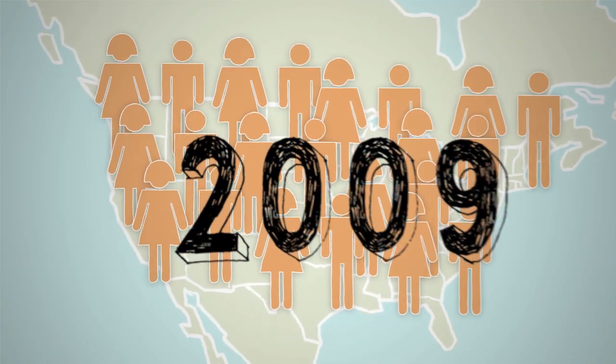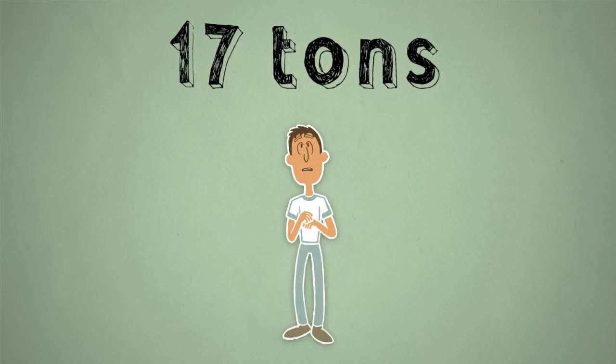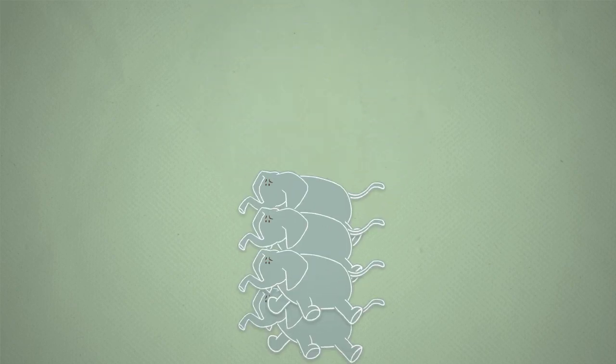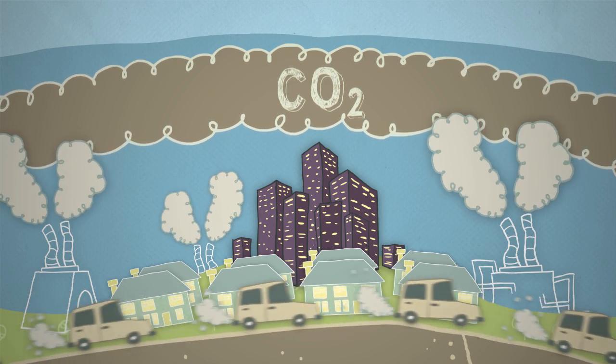In 2009, each person in the United States used enough fossil fuel energy to release an average of 17 tons of carbon dioxide. That's about the equivalent of four African elephants. Over time, all of that carbon dioxide really starts to add up.